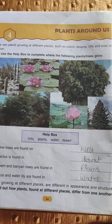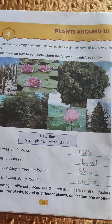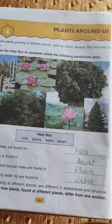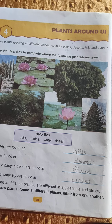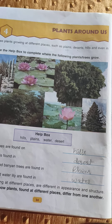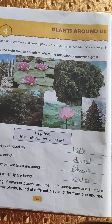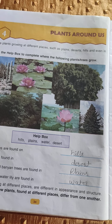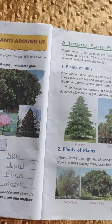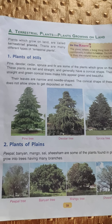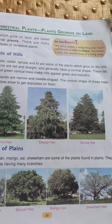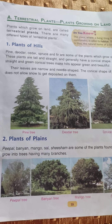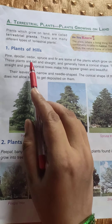Good morning children. In our previous class we started a new chapter called 'Plants Around Us.' In this chapter we studied about different types of plants which grow in different places like hills, desert, plains, and in water. We also learnt about terrestrial plants which grow on land, and habitat — the place where a living thing lives most comfortably. Today we will learn about plants of hills.